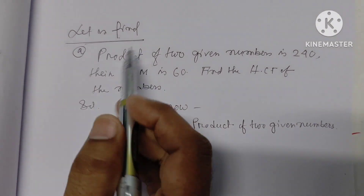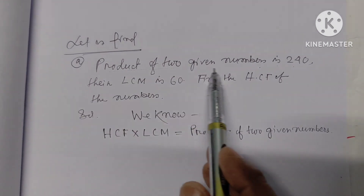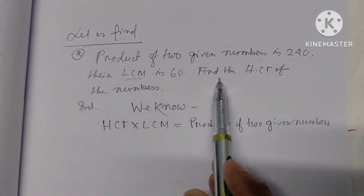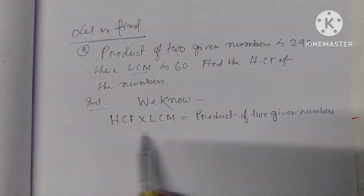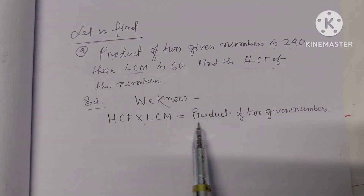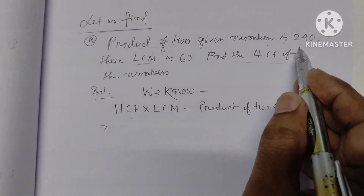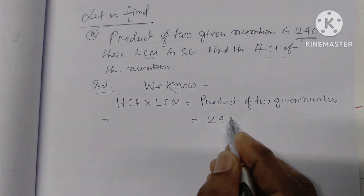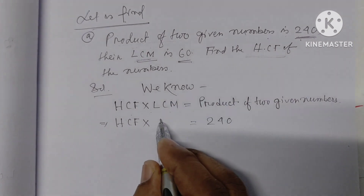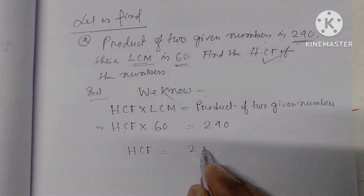Let us find: the product of two given numbers is 240, their LCM is 60. Find the HCF of the numbers. The product of two given numbers is 240 and the LCM is 60, so we use the relationship to find the HCF. We divide 240 by 60 to get the HCF, which is 4.